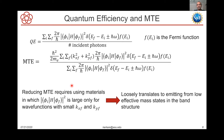From these equations one can see that reducing the mean transverse energy requires using materials for which the overlap integral is large only for wave functions with small k_x and small k_y. This loosely translates to emitting from low effective mass states in the band structure. That is why we search for materials with low effective mass, hoping they will give us low mean transverse energy — because for low effective mass states you have small k_x and small k_y while still getting a large overlap integral.